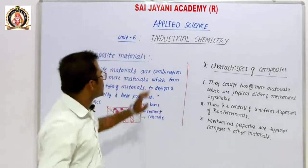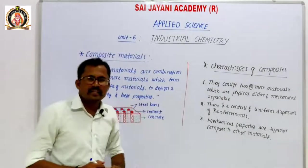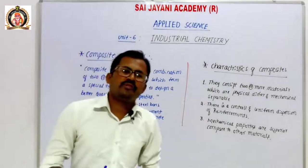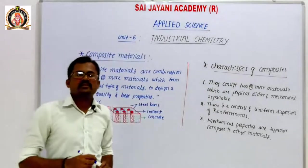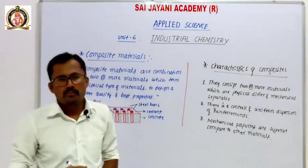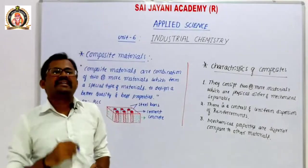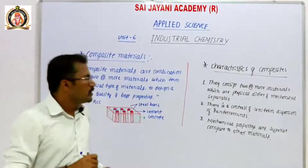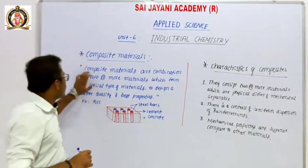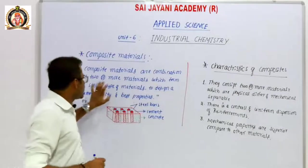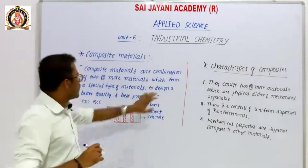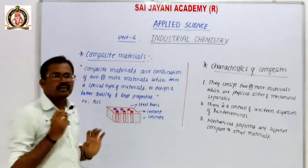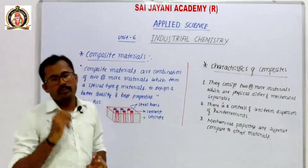The next concept in industrial chemistry is composite material. Composite materials are the combination of two or more materials which are specially designed to achieve required properties of a material — forming a special type of material with better quality and best properties.